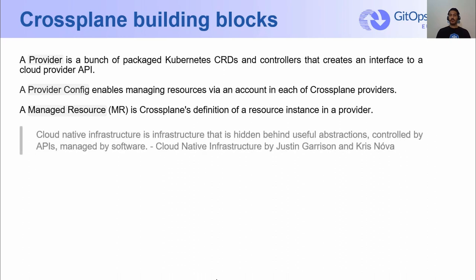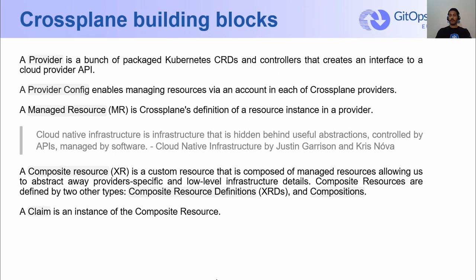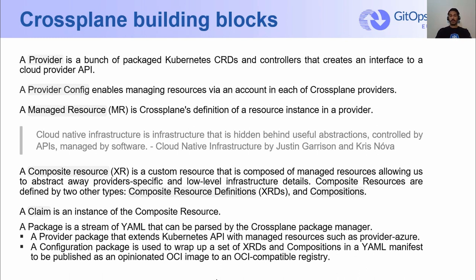As stated in the Cloud Native Infrastructure book by Justin Garrison and Chris Nova, cloud-native infrastructure is infrastructure that is hidden behind useful abstractions, controlled by APIs, managed by software. Crossplane enables sampling infrastructure from multiple vendors and exposes it as a higher-level abstraction using composites. A composite resource is a custom resource composed of managed resources, allowing us to abstract away low-level infrastructure details. They are defined by composite resource definitions and compositions. A claim is an instance of a composite resource. Crossplane also has the concept of packages, like the previously mentioned provider packages and configuration packages. Packages themselves can also be packaged.